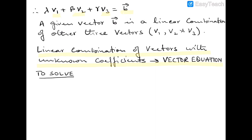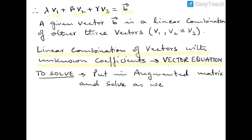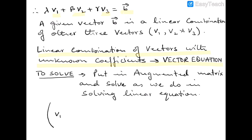A linear combination of vectors with unknown coefficients is a vector equation. To solve vector equations, put them in augmented matrix form and solve as we do in solving linear equations, where each column is vector v1, v2, v3, up to vn, augmented by vector b.